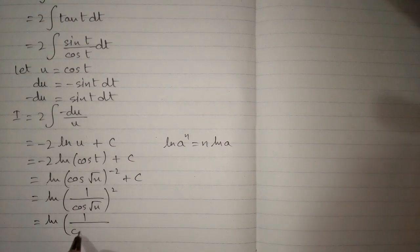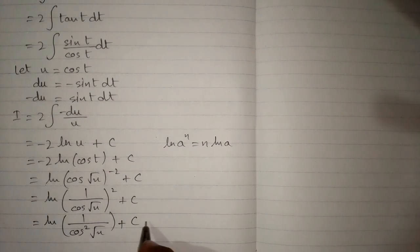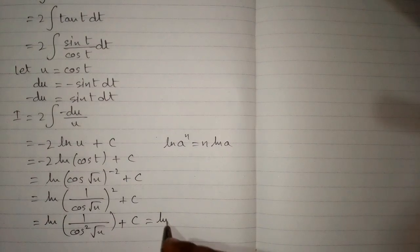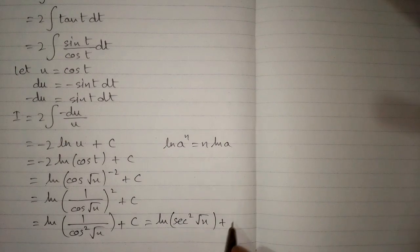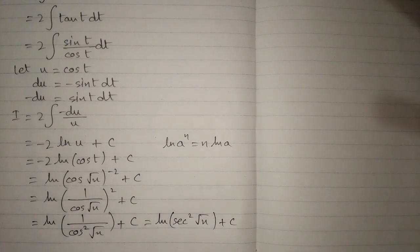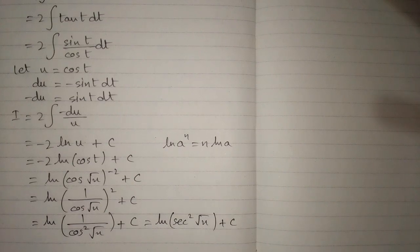This gives 1 upon cosine squared of square root of x plus C. Now, 1 upon cosine squared is secant squared. So the final answer is ln of secant squared of square root of x plus C. This is the required answer.